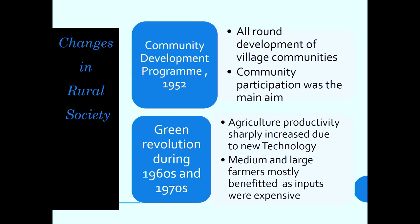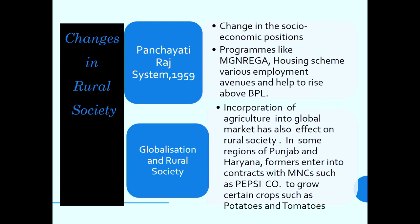In the Green Revolution, medium and large farmers mostly benefited as inputs were expensive. States like Punjab, Haryana, and Rajasthan became much more developed than other states in terms of agriculture due to the Green Revolution. Similarly, the Panchayat system introduced in 1959 was also a game changer, which really changed the socio-economic positions of families.